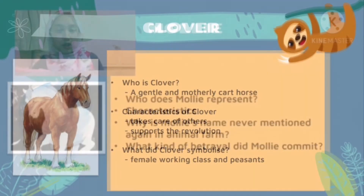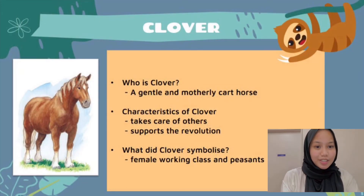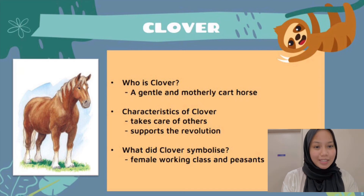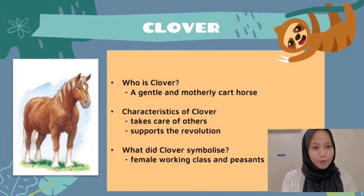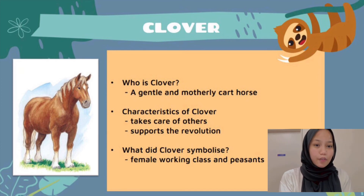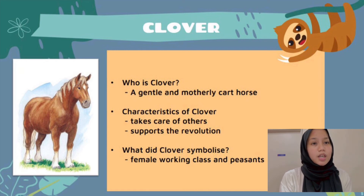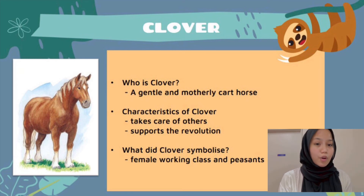I'm Misha and I will continue the presentation by presenting about Clover. Clover can be described as a gentle, motherly, and powerful cart horse. Being the most maternal of animals, she always takes care of others. She is also the one who cares for the ducklings who lost their mother during Old Major's meeting, which can be seen in Chapter 1 where she made a wall around them and the ducklings nestled inside it.